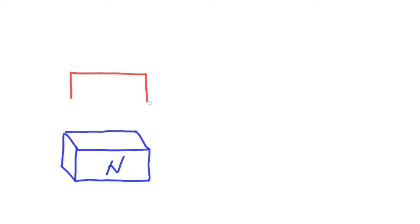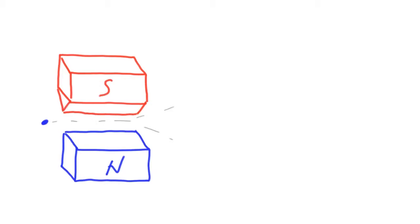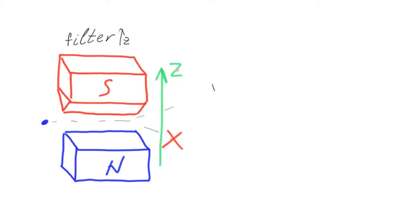The Stern-Gerlach device can be seen as a kind of filter. Initially spin is randomly oriented, but after passing the device, the electrons deflecting upward will have spin up relative to the device axis, and those deflecting downward will have spin down. If we block electrons deviating downwards, it becomes a filter that transmits spin up electrons and blocks spin down ones.